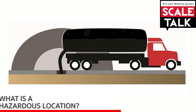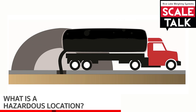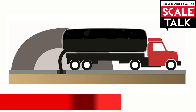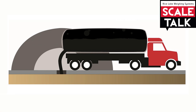Here we have a diagram of a tanker truck carrying hazardous material. As you can see, we have different areas labeled: the area inside the tank itself, as well as two areas outside the truck denoted by different shades of gray.